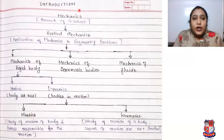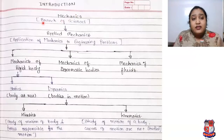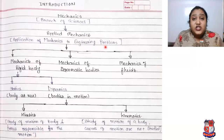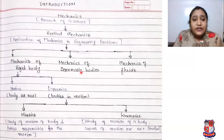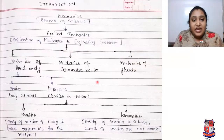In the introduction we are going to discuss: what is mechanics? Mechanics is the branch of sciences. Under it, what is applied mechanics? Applied mechanics is the application of mechanics to engineering problems. Problems may include mechanics of rigid body, mechanics of deformable bodies, and mechanics of fluids. So under applied mechanics there are 3 subparts: mechanics of rigid body, mechanics of deformable bodies, and mechanics of fluids.